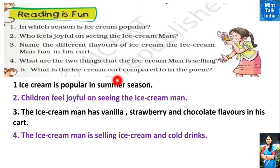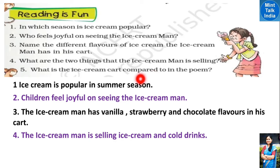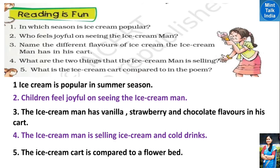Question five: What is the ice cream cart compared to in the poem? (Is poem mein ice cream man ke gaadi ko kis ke saath tulna ki gayi hai?) Answer: The ice cream cart is compared to a flower bed. The cart is so colorful with its ice creams and cold drinks that it resembles a bed of flowers.